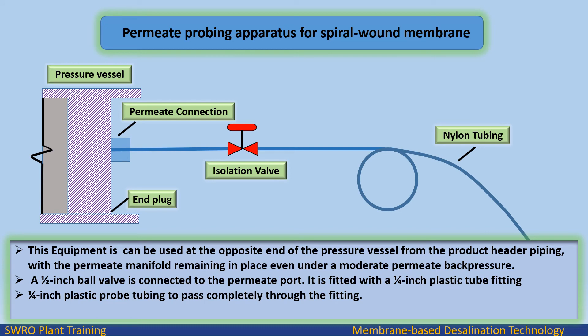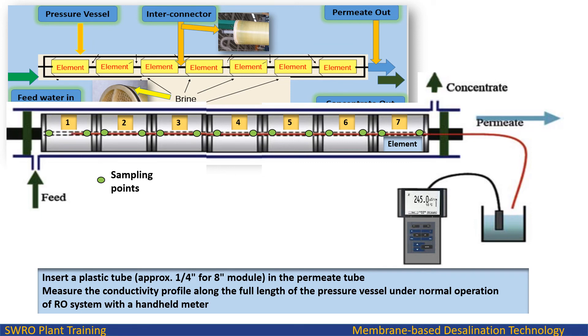This equipment can be used at the opposite end of the pressure vessel from the product header piping, with the permeate manifold remaining in place even under moderate permeate back pressure. A half-inch ball valve is connected to the permeate port and fitted with a 1¼-inch plastic tube fitting. A 1¼-inch plastic probe tubing is inserted to pass completely through the fitting and into the permeate tube to cover approximately 4 to 8 modules.